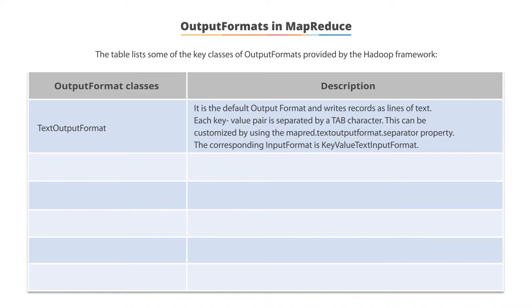This can be customized by using the MapReduce text output format dot separator property. The corresponding input format is key value text input format.